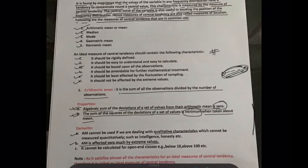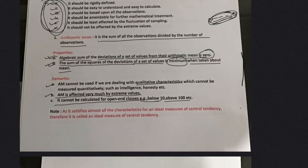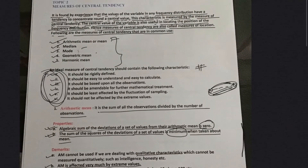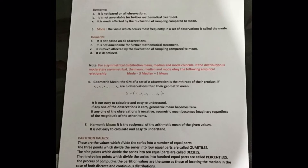All these properties cannot all be simultaneously satisfied — nothing is perfect, but the majority of properties should be satisfied. Arithmetic mean cannot be calculated for open-end classes, such as 'below 10' or 'above 100.' Because it satisfies almost all the characteristics of an ideal measure of central tendency, arithmetic mean is called an ideal measure of central tendency. If asked which is the ideal measure, the answer is arithmetic mean.